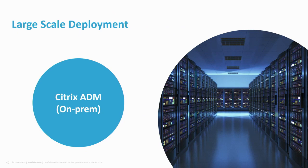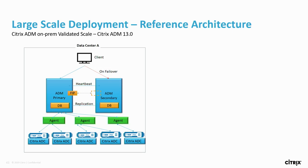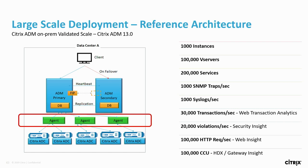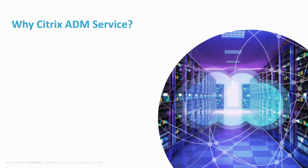For large-scale deployment, we did extensive reference architecture testing internally for HA deployment of ADM with multiple agents. We validated 4,000 Citrix ADC instances, 100,000 virtual servers, 100,000 requests per second for Web Insight, and 100,000 users for HDX Insight and Gateway Insight. That was for on-prem.